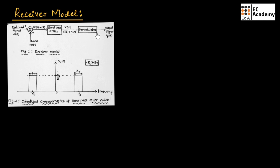The demodulator shown in this receiver model will depend upon the type of modulation used to generate the modulated signal S(t). So depending upon different types of analog modulation techniques, this demodulator will also change. The band pass filter is assumed to be ideal for theoretical discussion.